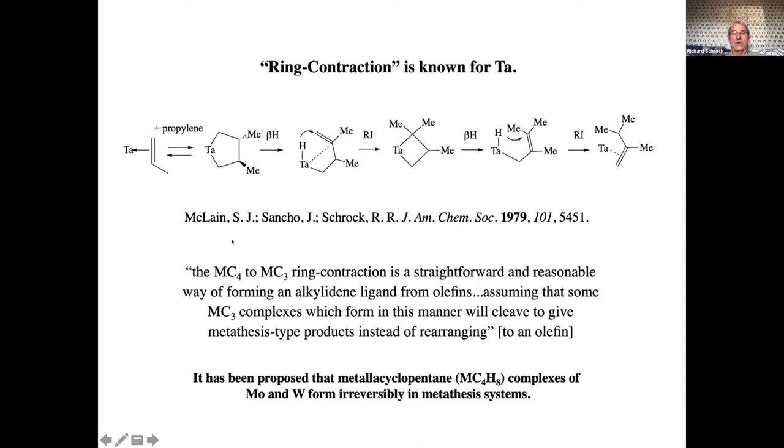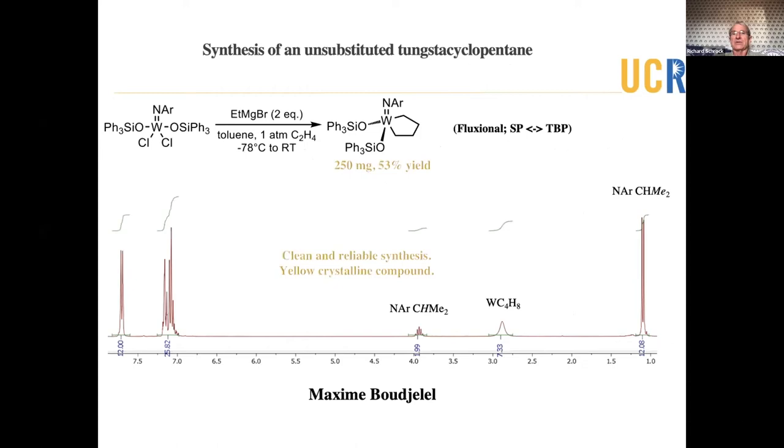It is not a beta hydride elimination, reductive elimination, which is another possibility. These could reductively eliminate to give the product. But mechanistic studies showed that surprisingly, that was not the case. So this reaction has been sitting around for 60 years. But I did have the idea that, as shown in quotes here, and it's written in this paper, the MC4, this one, to MC3 ring contraction, is a straightforward and reasonable way of forming an alkylidine from olefins, assuming that some MC3 complexes, which form in this manner, will cleave to give metathesis products instead of rearranging. So instead of rearranging, this could just split up and give an olefin and an alkylidine. And that is a possible way, if you could discover it, molybdenum and tungsten metallicycles would be converted into alkylidines.